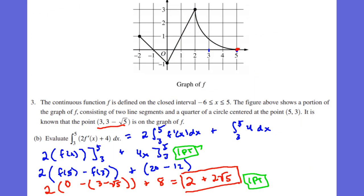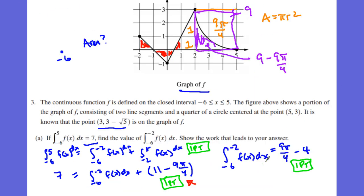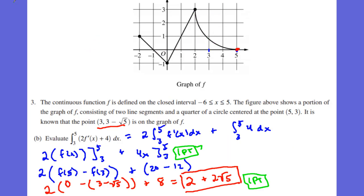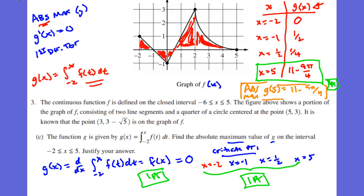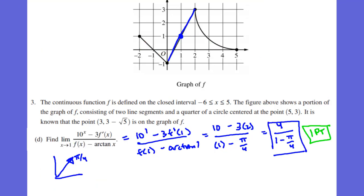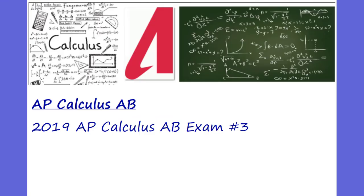This is a nine-point problem for number three. Three points for letter A, two points for letter B — that's five points total — three more points for letter C, which is eight points, and then our ninth point is four over one minus pi over four. This was the 2019 AP Calculus exam problem number three. Thanks guys, bye.